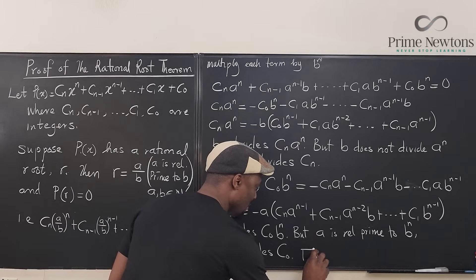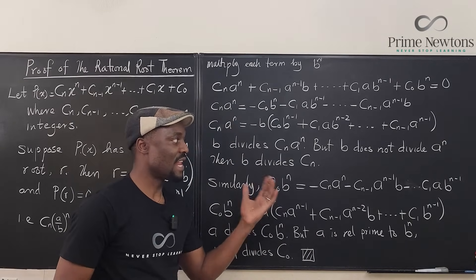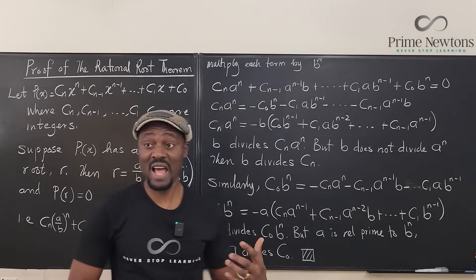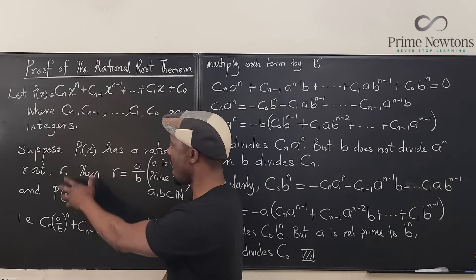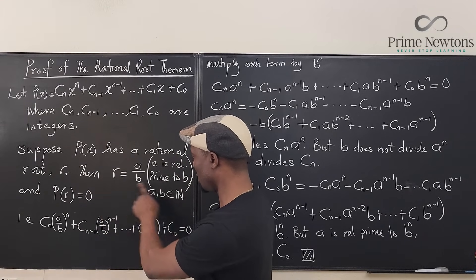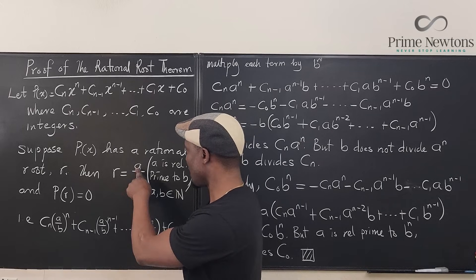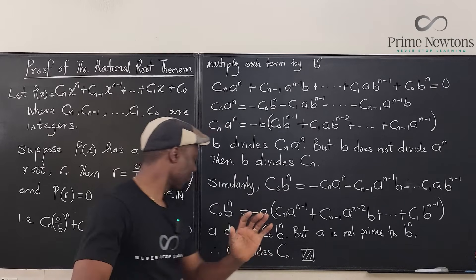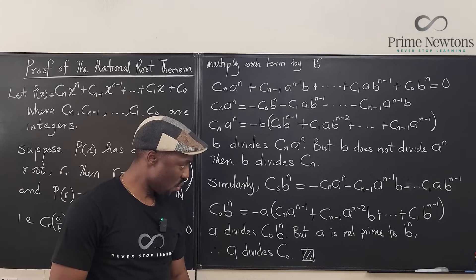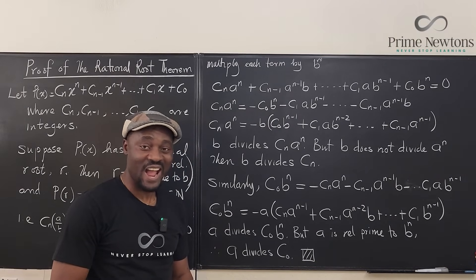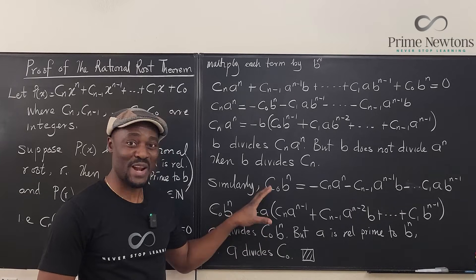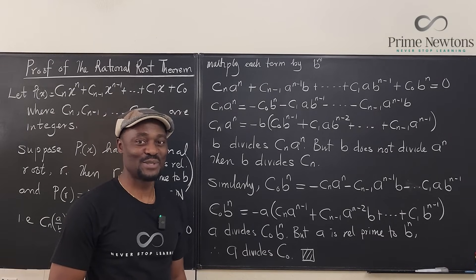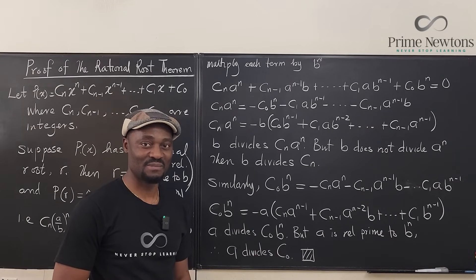And that's all. I should have stated the theorem clearly on the board, but that's the theorem I explained from the beginning — that a must divide the constant and b must divide the leading coefficient. I don't have more space on the board, but I hope you understand what happened here. Leave a comment in the comment section. Never stop learning — those who stop learning, stop living. Bye-bye.